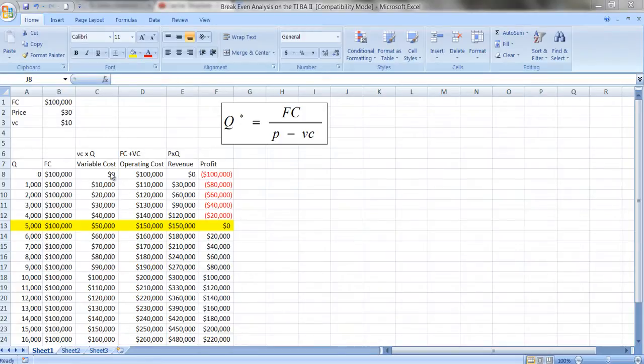Now, variable costs are costs that vary or change depending on how much you produce. And those would be things like labor costs, raw materials. If you're going to produce more of something, you'll need probably more labor hours in order to produce it, and you'll need more raw materials. But if you don't produce anything, it doesn't cost you anything.